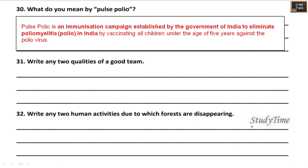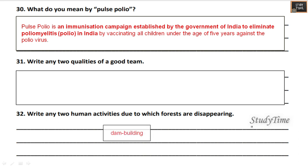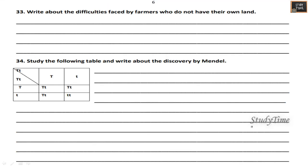What do you mean by Pulse Polio? It is an immunization campaign established by the government of India to eliminate polio. Write any two qualities of a good team: cooperation and communication. Write any two human activities due to which forests are disappearing: dam building, mining, and hunting.